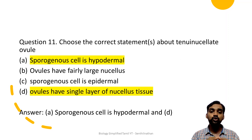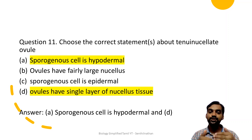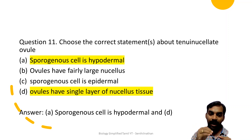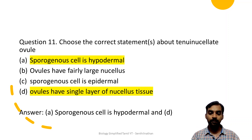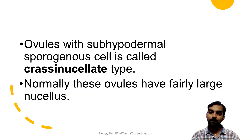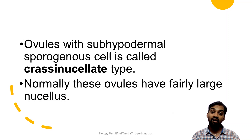Choose the correct statements about tenuinucellate ovule. Options A and D are correct. Sporogenesis is hypodermal in tenuinucellate ovules. The fourth option states ovules have a single layer of nucellus tissue. Tenuinucellate means a single layer of nucellus. Ovules with sub-hypodermal sporogenesis are tenuinucellate with a single, fairly narrow layer of nucellus.